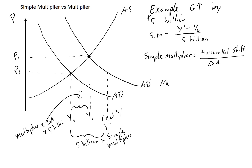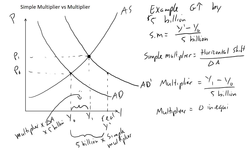So when you think about the multiplier, that's going to be equal to y1 minus y0 over five billion. The multiplier is really about how the equilibrium is changing once we allow the price level to go up, whereas the simple multiplier measures the horizontal shift from a one-unit change in capital A. In general, the multiplier equals the change in equilibrium y — short-run equilibrium y — divided by the change in A.